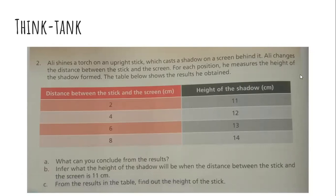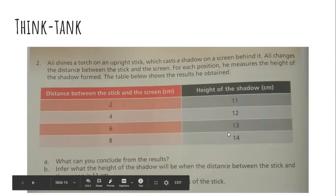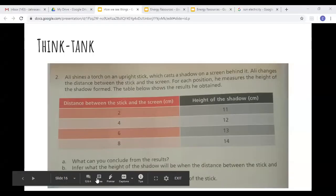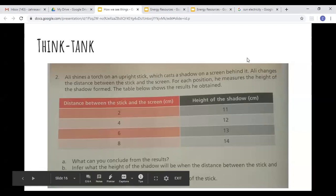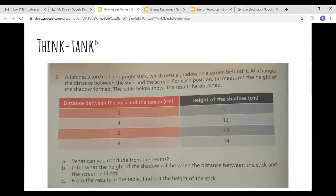Infer what the height of the shadow will be when the distance between the stick and the screen is 11 cm. Right now at 8 cm distance, after an increment of 2 it will be 10, so the height should be 15; after another increment of 2 it will be 12, and height should be 16. Between distance 10 and 12 comes 11, and between heights 15 and 16 comes 15.5 — so the answer is 15.5 cm. To find the height of the stick: when there is zero distance, working back from 2 cm giving 11 cm, at zero distance the height would be 10 cm, so the original length of the stick is 10 cm.